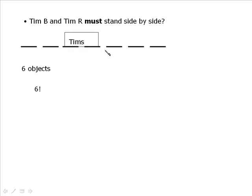Now that changes things because if you count up the number of objects now, we have one, two, three, four, five, six objects, which can be arranged six factorial ways. But don't forget the Tims can be arranged because this is Tim B and this is Tim R, and they can switch positions. So the way we do that is we just, two objects can be arranged two factorial ways. And then we multiply again. So it's six factorial times two factorial. So very much like the previous question. They must stay together, so we treat them as one object. And then we arrange them amongst themselves.